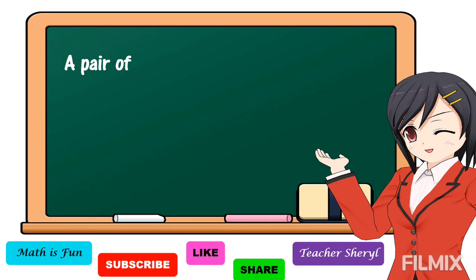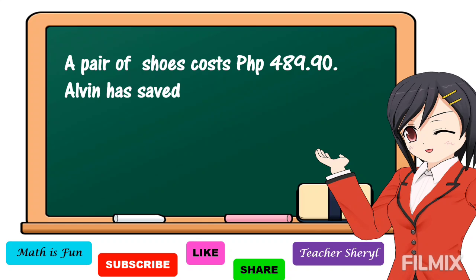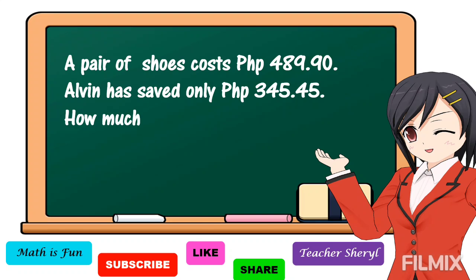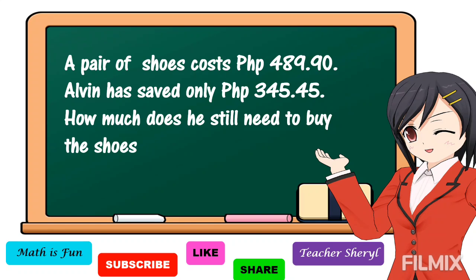Here is our first problem. A pair of shoes costs 489 pesos and 90 centavos. Alvin has saved only 345 pesos and 45 centavos. How much does he still need to buy the shoes?